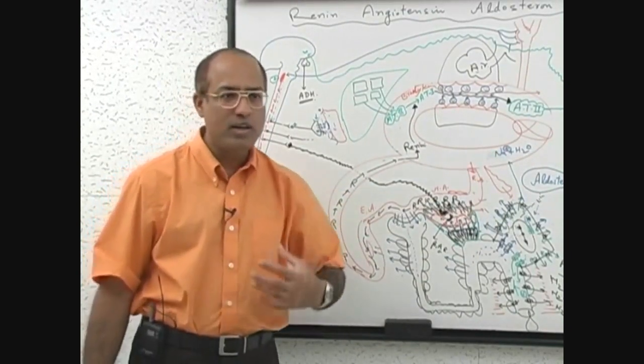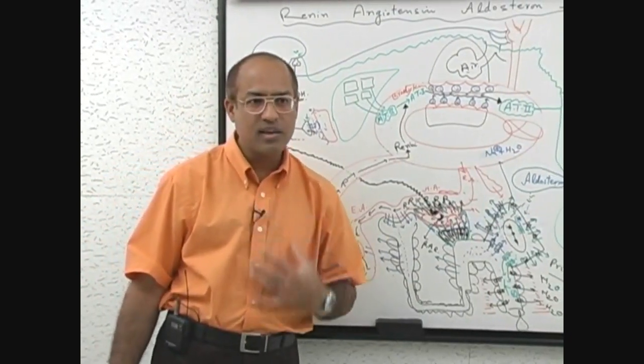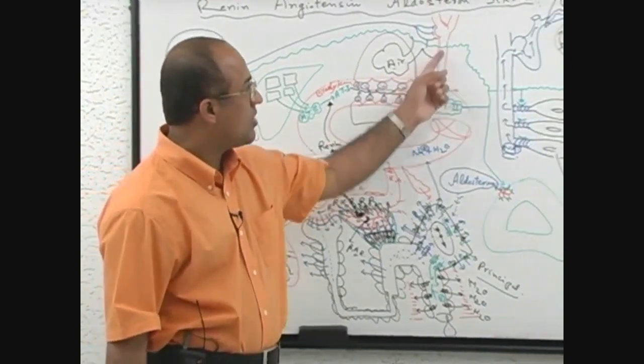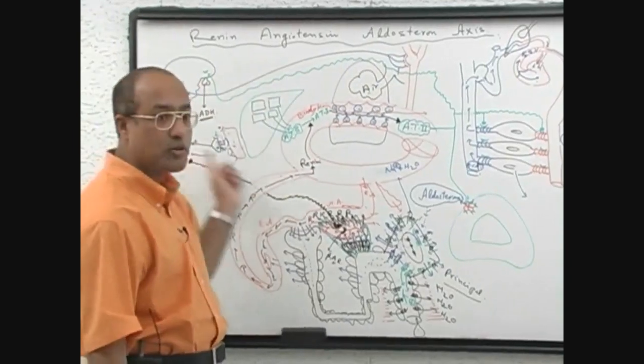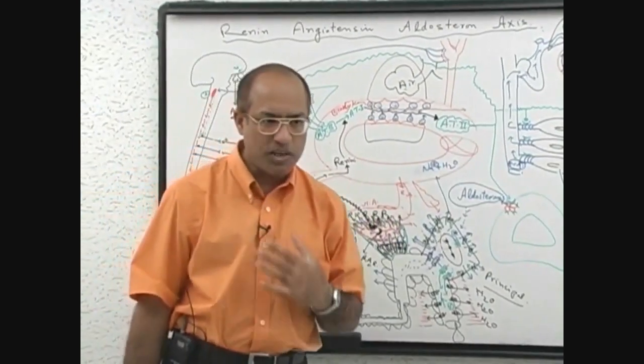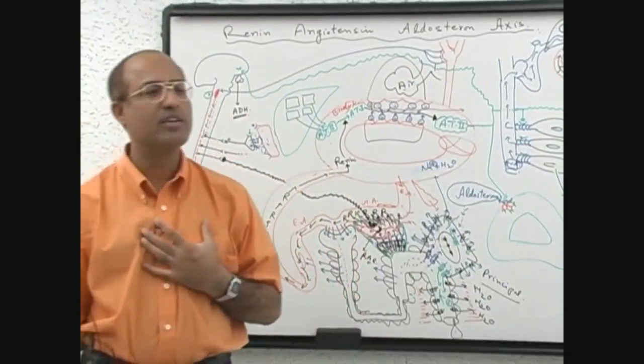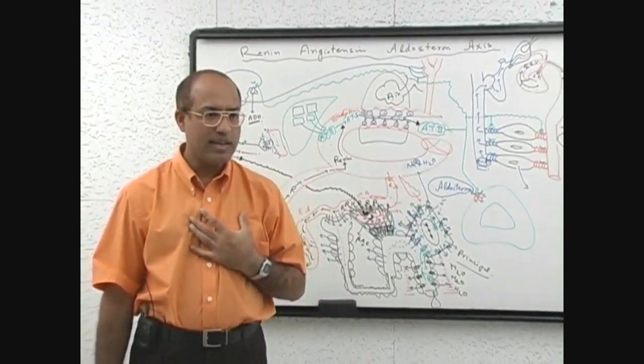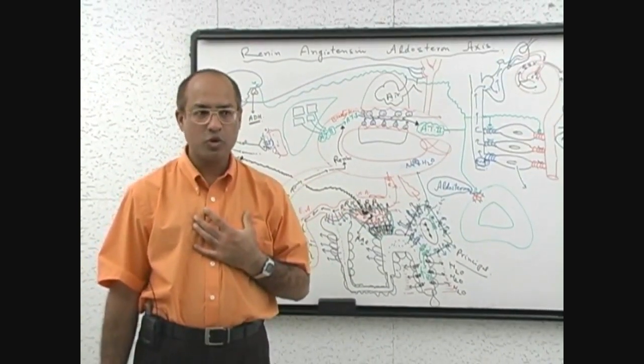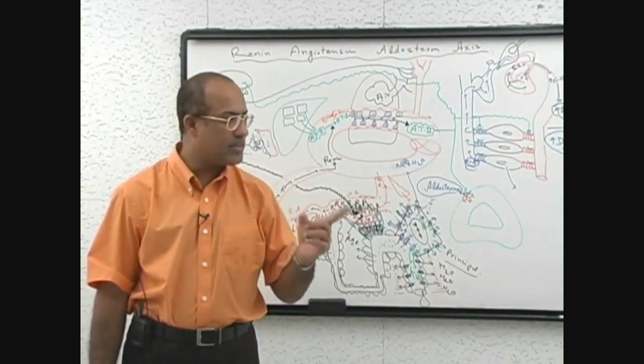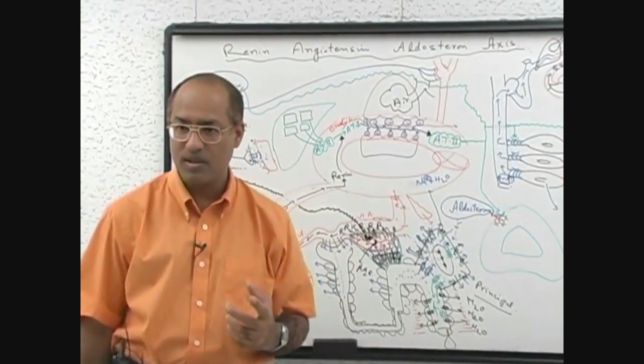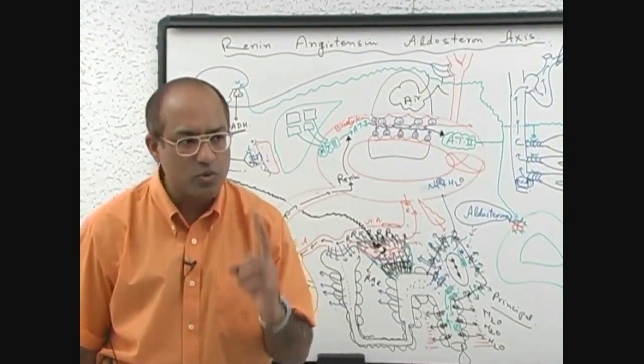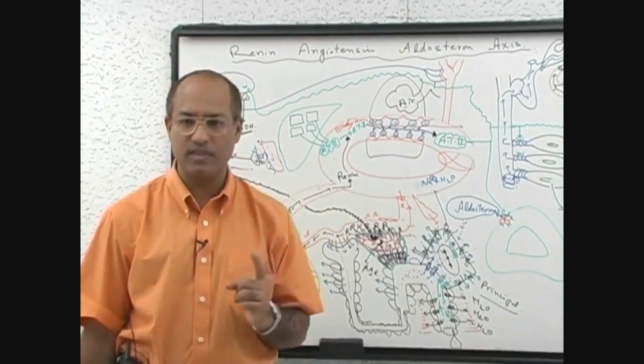In the same way, a person who has cardiac failure will also have blood pressure that drops. So sympathetic stimulation is also chronically activated. So patients who have congestive cardiac failure have chronic sympathetic activation and there is chronic renin-angiotensin-aldosterone activity.